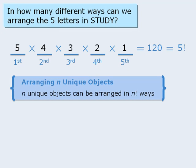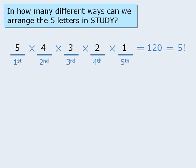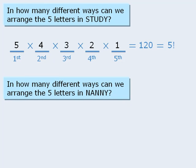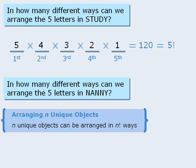Now compare our original question with this next question. Here, we want to arrange the letters in the word nanny. Now for this question, our rule will not work, because it requires the objects to be unique, and in our question we have three identical N's.